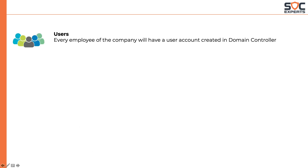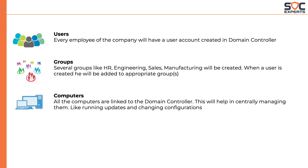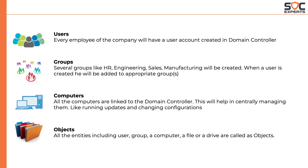Users: every employee of the company will have a user account created in the domain controller. Groups: several groups like HR, engineering, sales, and manufacturing will be created. When a user is created, he will be added to the appropriate groups — these are similar to WhatsApp groups. Next, we have computers: all the computers are linked to the domain controller, which helps in centrally managing them, like running updates and changing configurations. Objects: all entities including users, groups, computers, a file, or a drive are called objects.